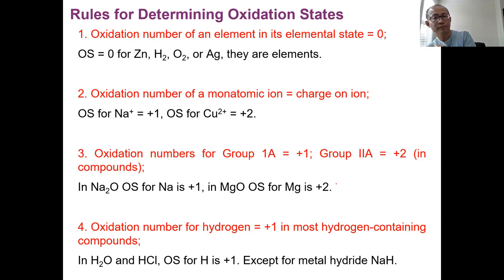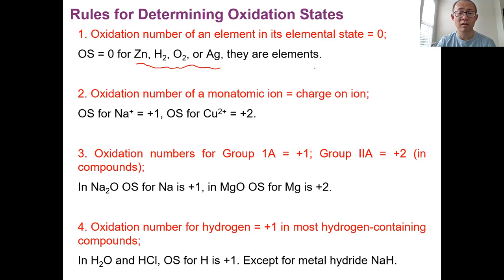The first rule: the oxidation number of a free element — such as zinc, hydrogen gas, oxygen gas, or silver — these are all elements, some diatomic, some monoatomic. In that case, the oxidation number is zero. Rule number two: the oxidation number of an ion — a real ion that carries a charge, like sodium⁺ or copper²⁺ — the oxidation number is equal to the charge of the ion. If the charge is +1, the oxidation number is +1; if +2, the oxidation number is +2. You need to keep the sign.